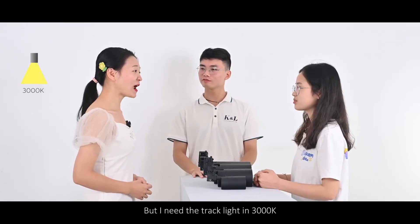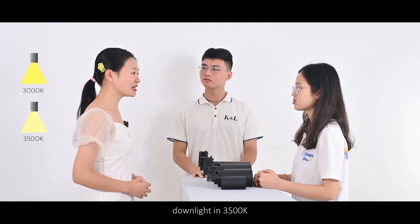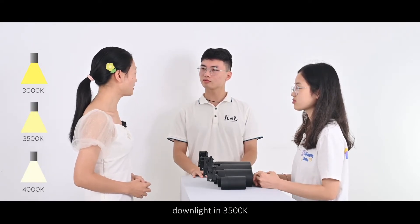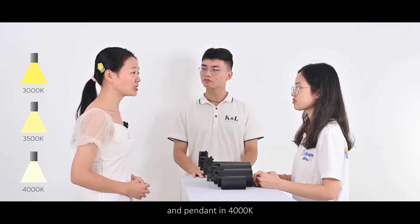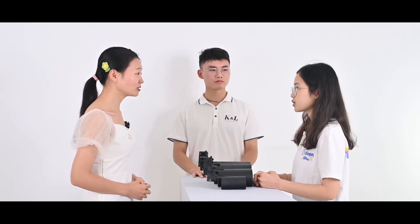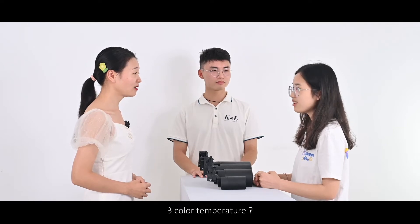But I need the track lines in 3000 Kelvin, the downlights in 3500 Kelvin and the pendant in 4000 Kelvin. Can you do that? Three color temperatures? Yeah!